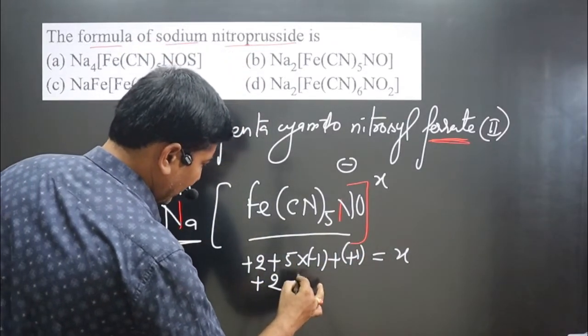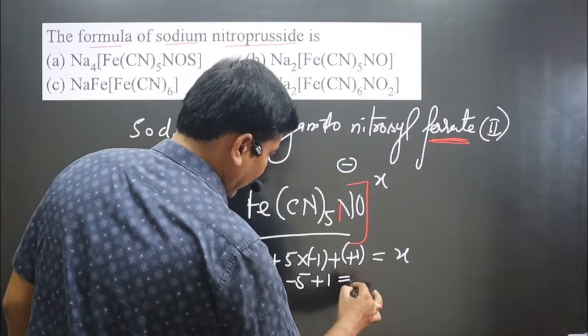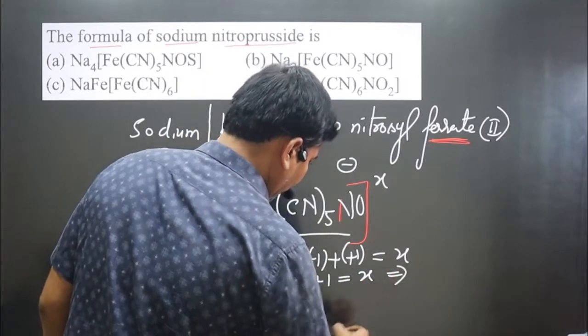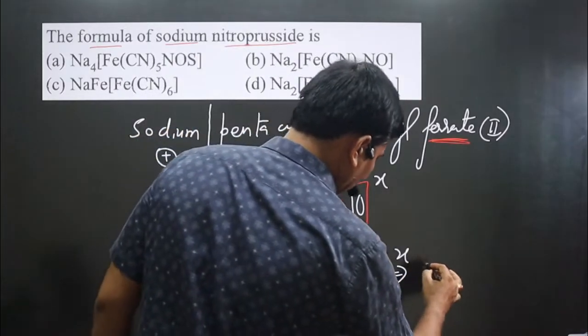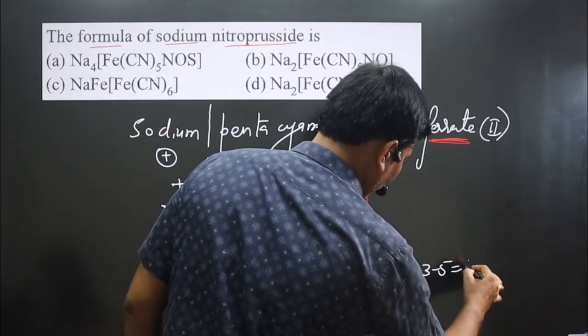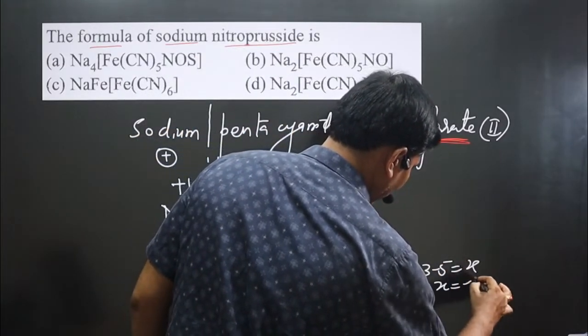This is what, plus 2, minus 5 and it is plus 1 and is equal to X is there. If you simplify, so it will be plus 3 and then we are getting 3 minus, 3 minus 5 is equal to X, then X is equal to what, minus 2 is there.